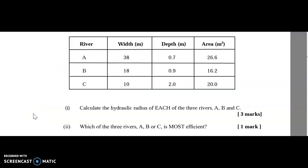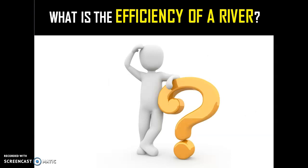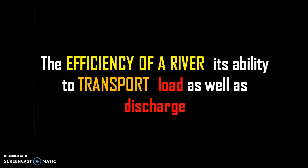Part two of the question asks: which of the three rivers — A, B, or C — is the most efficient? Before we answer that, we need to understand what the efficiency of a river is. By definition, the efficiency of a river is its ability to transport load as well as discharge.